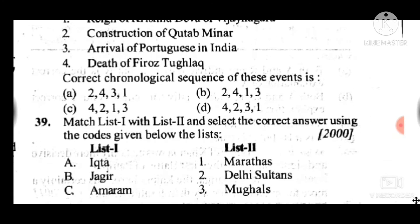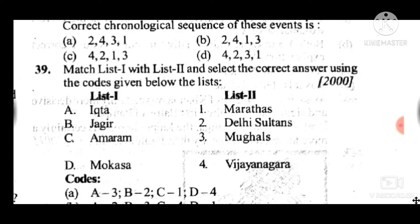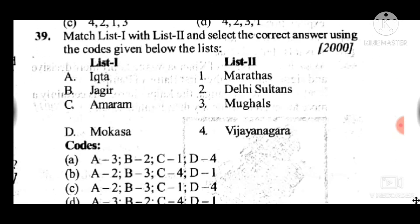Question 39 is a map-based question. Answer to question 39 is B. A relates to Ikta — Delhi Sultanate; Jahagir relates to Mughals; Amaram relates to Marathas; and Moksha relates to Vijayanagara.